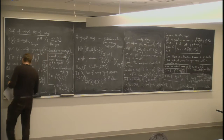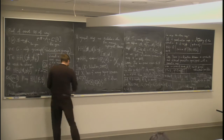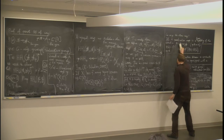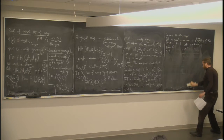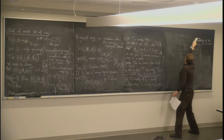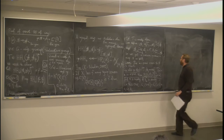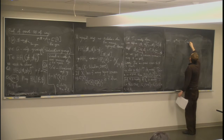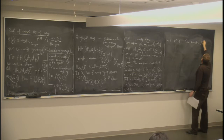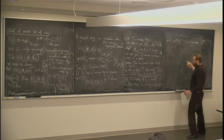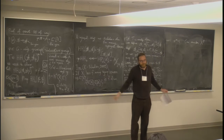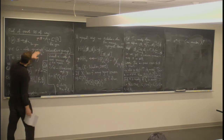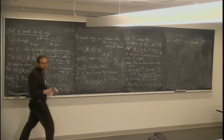This proves finite dimensionality in the ψ=1 case. If ψ is not equal to 1 but has finite order, we consider the fixed points and apply the same argument. This also proves finite dimensionality. In general, using the fact that this is a reductive group, we can prove it for any ψ.